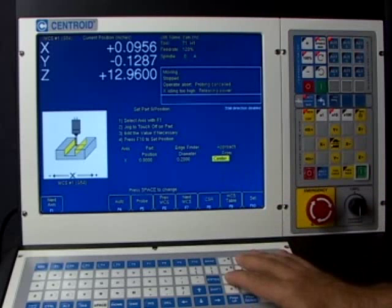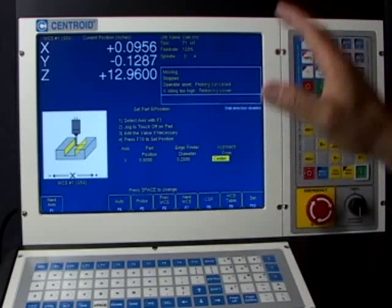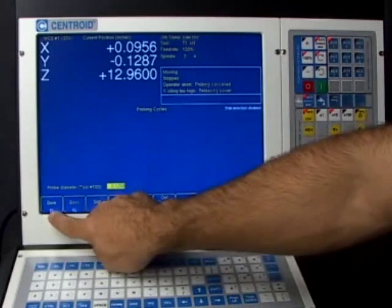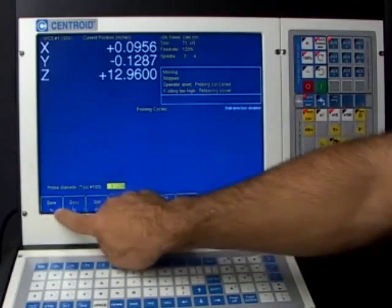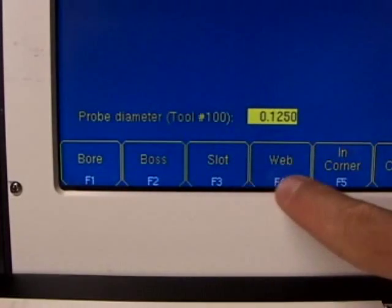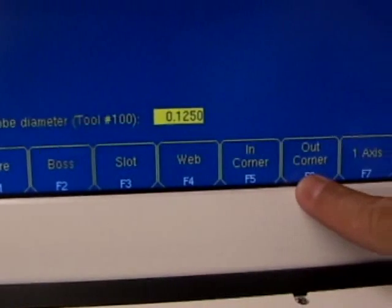And all we have to do then if we're setting this with the probe is hit the F5 probe button and pick bore. There's a whole bunch of choices of common shapes that you can probe right here. Bores, bosses, slots, webs, inside corners, outside corners, or one axis.